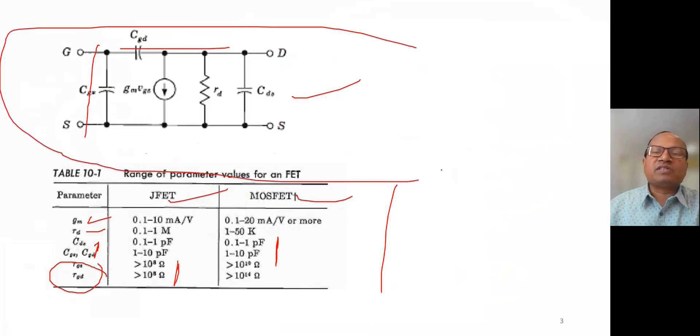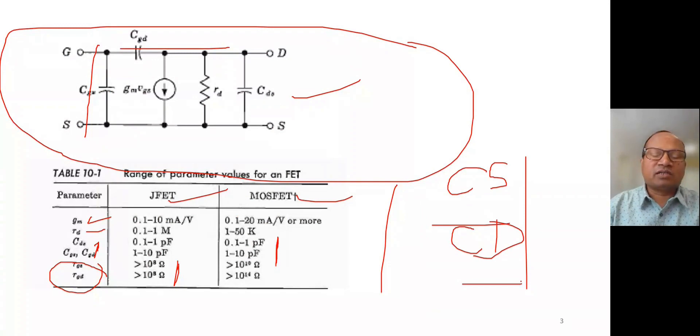So this is a high frequency model which is very simple. When we analyze the common source and common drain amplifier in JFET, you have two amplifiers: common source and common drain. In the analysis, this model helps a lot because we calculate input impedance, output impedance, voltage gain, and current gain.